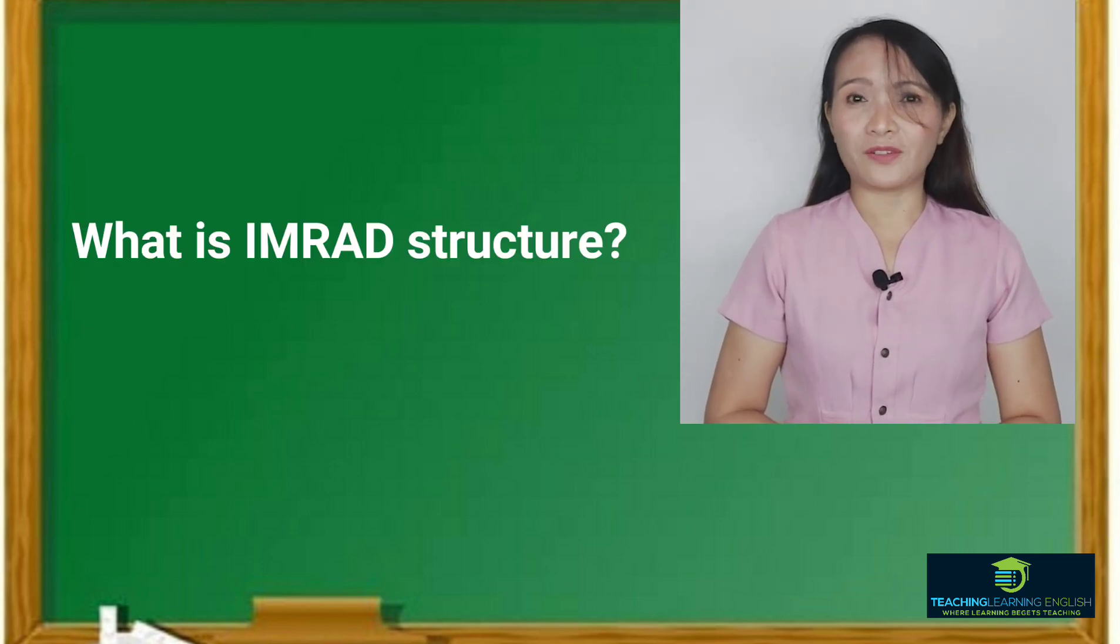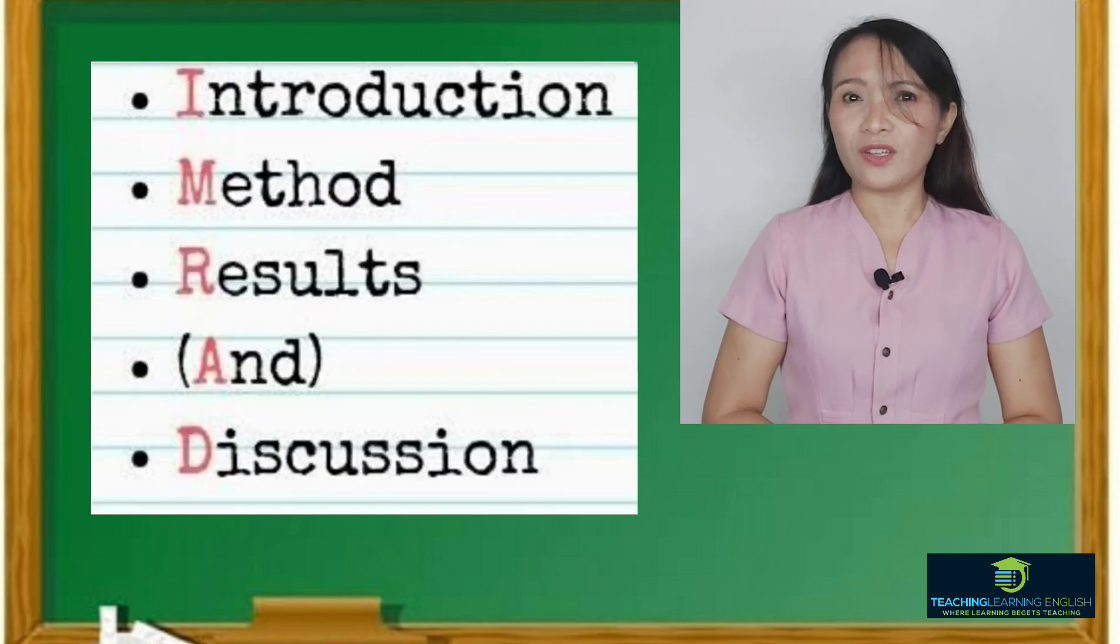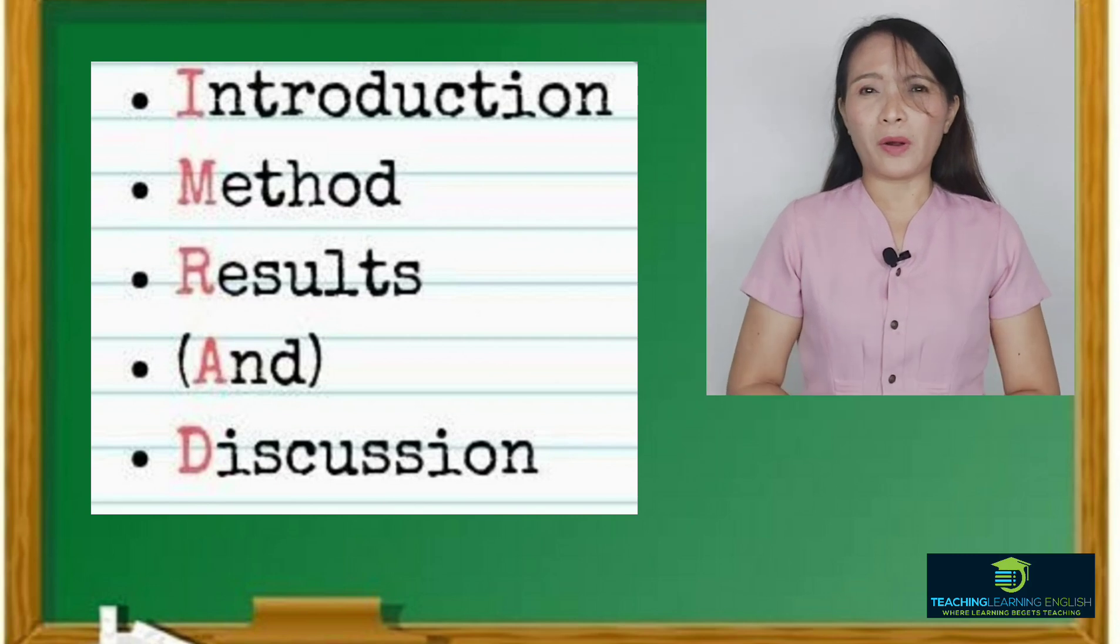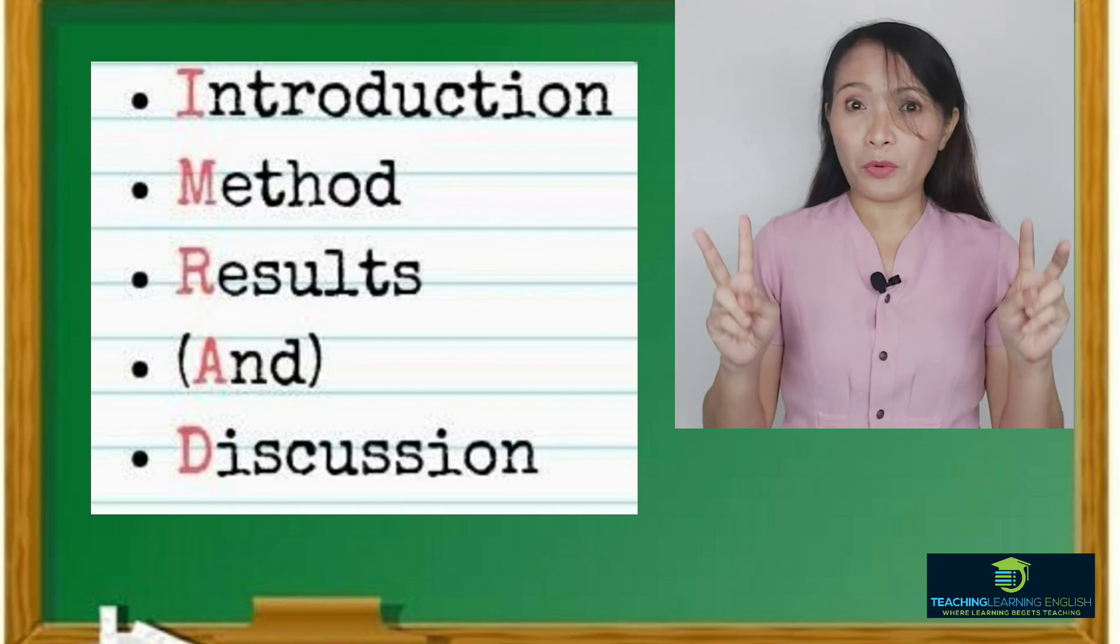Now let's get to know what IMRAD structure is. I is introduction, M stands for methods, R results, and discussion. Of course, there are other parts of a research paper which you will study further in your practical research subjects. But the basic structure is what we call IMRAD.